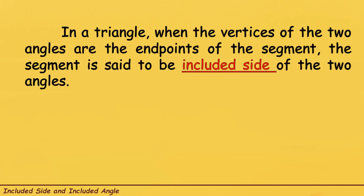Let us define first the Included Side and Included Angle. In a triangle, when the vertices of the two angles are the endpoints of the segment, the segment is said to be the Included Side of the two angles. Meaning to say, ang sinasabi natin na Included Side, this is the side between two angles of the triangle. Sa triangle, may tatlong angles doon, ang magiging given doon is dalawa lang — dalawang angles — at ang included side doon ay yung napaggigitnaan nung dalawang angles na yun.